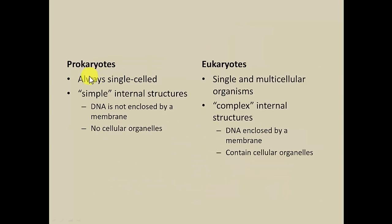Prokaryotes are considered the simple microbes and are always defined as having one cell — they're always single-celled. Their DNA is somewhat uncovered, floating around in the cell without any structure around it, and they don't have any internal complexity. Eukaryotes, on the other hand, are more evolved and have a more complex nature — they can occur in both single and multicellular forms.